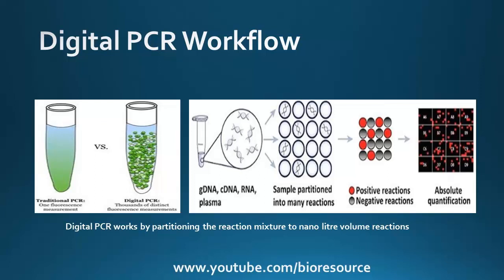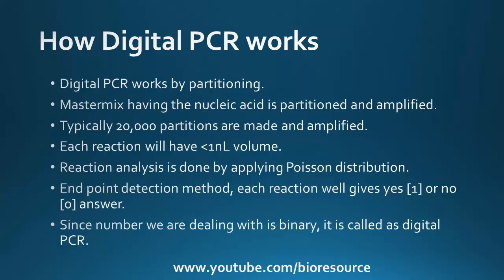Digital PCR works by partitioning the master mix. The master mix containing nucleic acid is partitioned and amplified. Typically, 20,000 to 100,000 partitions are made, and each of these nanoliter-volume reactions is PCR amplified. Reaction analysis is done by applying Poisson distribution.